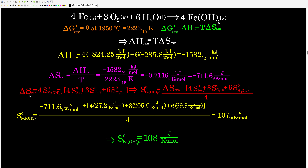Now to get the standard molar entropy of iron(III) oxide — our goal — we write delta S of the reaction as: four times the entropy of iron(III) oxide minus four times the entropy of iron, minus three times the entropy of oxygen, minus six times the entropy of liquid water. Rearranging to solve for the entropy of iron(III) oxide and plugging in the given values and the delta S of reaction we calculated, we find that the standard molar entropy of iron(III) oxide is about 108 joules per kelvin·mole.